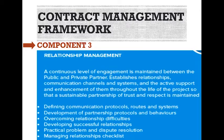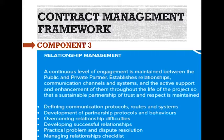Component 3: Relationship management. A continuous level of engagement is maintained between the public and private partner. It establishes relationships, communication channels and systems, and the active support and enhancement of them throughout the life of the project, so that a sustainable partnership of trust and respect is maintained. This includes defining communication protocols, routes and systems, development of partnership protocols and behaviors, overcoming relationship difficulties, developing successful relationships, practical problem and dispute resolution, managing relationships, and checklists.